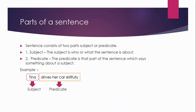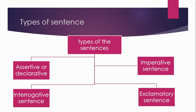This is all about subject and predicate. I hope you have understood. Now we will come to the next topic — types of sentences. What you mean by a sentence you have learned, but you haven't learned about the types of sentences. There are four types of sentences: assertive or declarative, interrogative, imperative, and exclamatory.